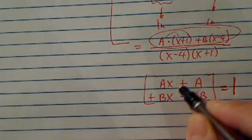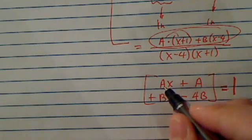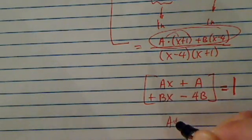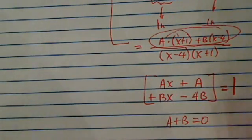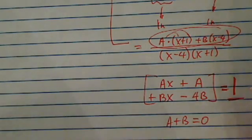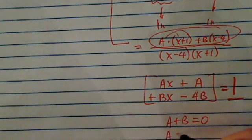So compare the coefficients here. I have A plus B has to equal to 0 because on this side, I have no x variable here. And then I have another equation, A minus 4B has to equal to 1.